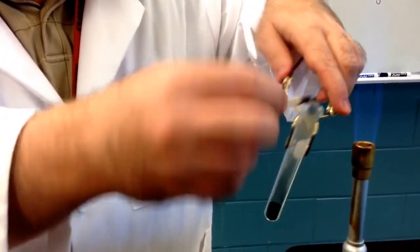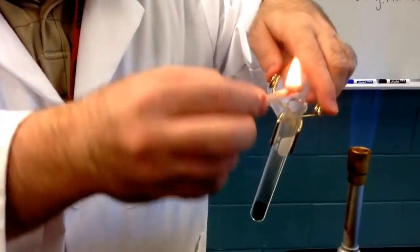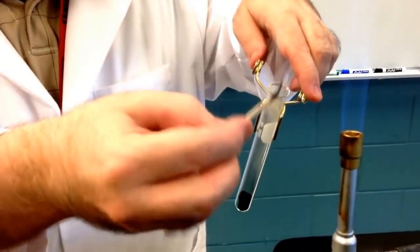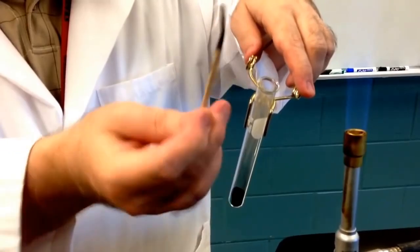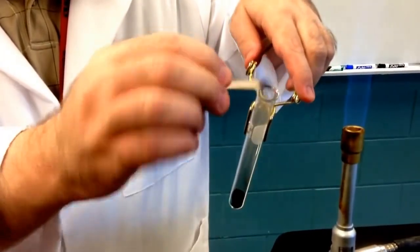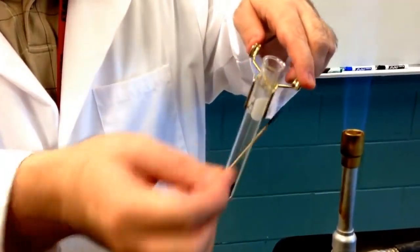And indeed, it does go out. And I'm not sure if you noticed, but the flame actually turned a little green, and that's because some copper actually got on the wooden splint, and the copper will burn green. So if that happens, that's normal.